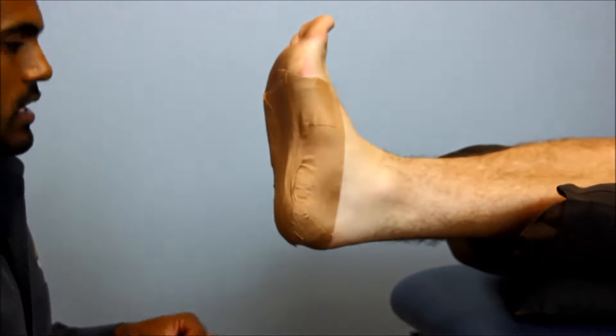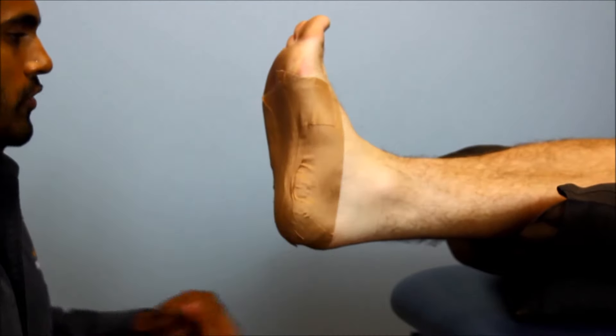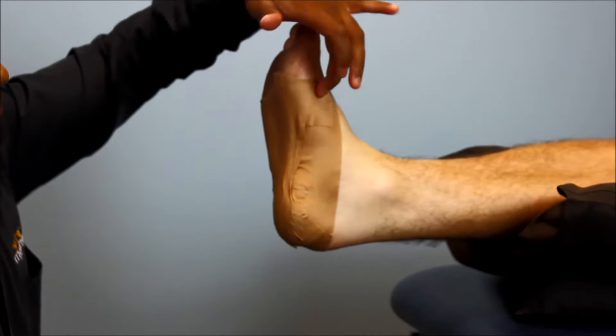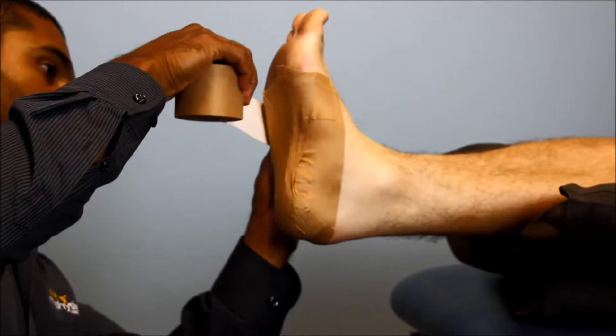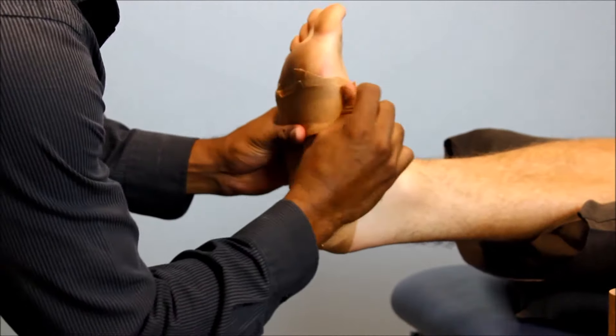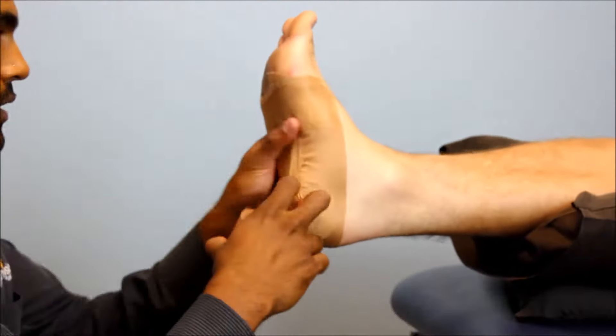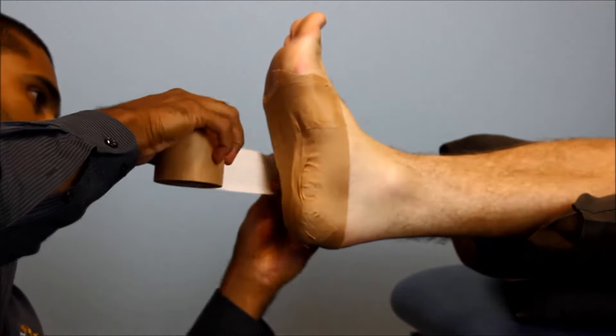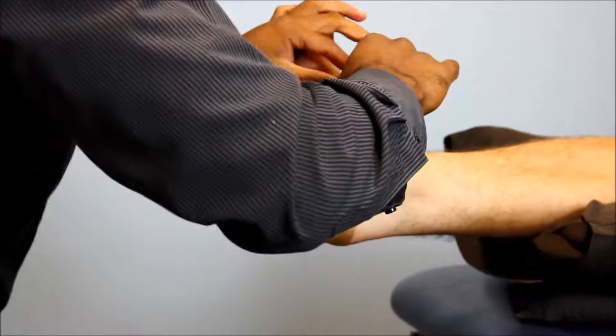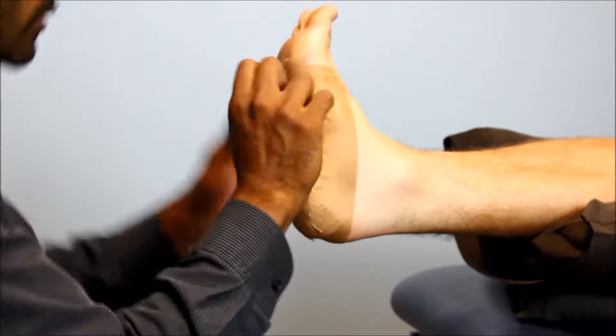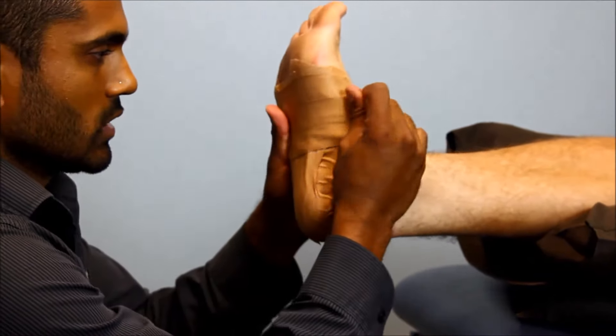Next step is we're going from the outside of the foot across to the inside with a series of strips of tape. And each time we're moving down the foot and just crossing the previous tape by about half. As you're coming around, just a little bit of tension as you're pulling up.